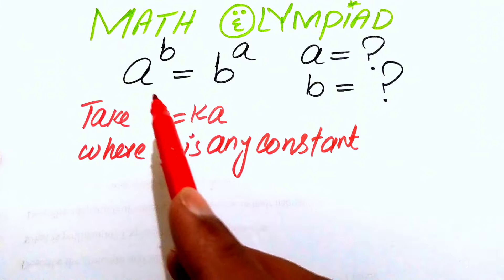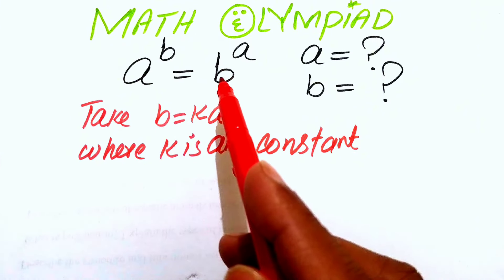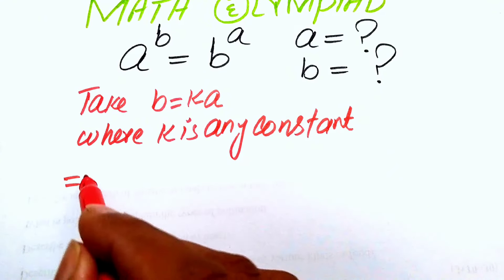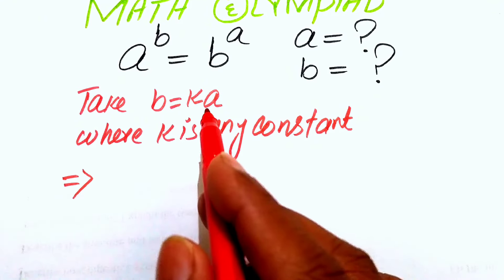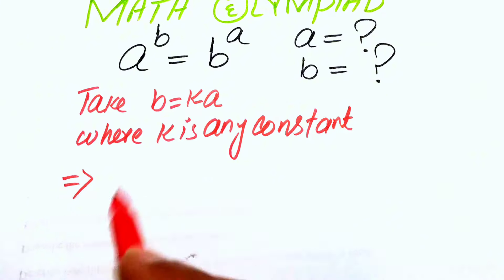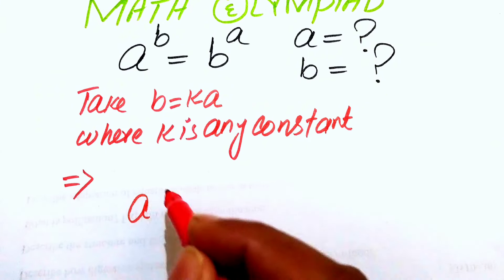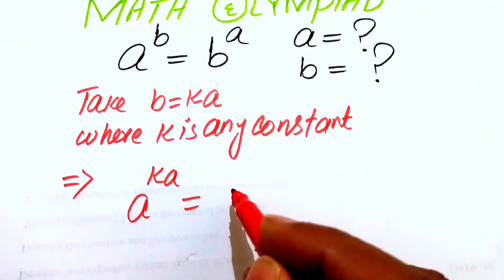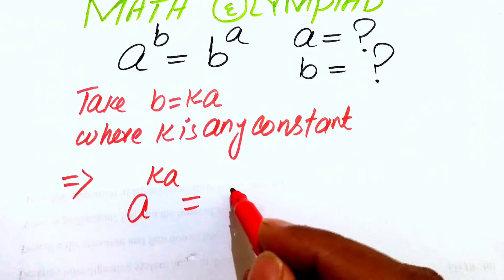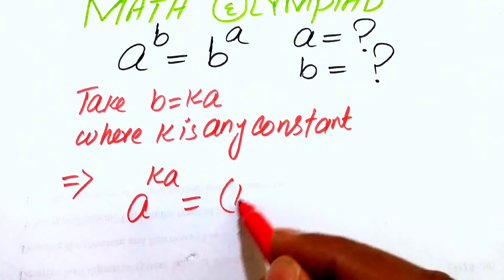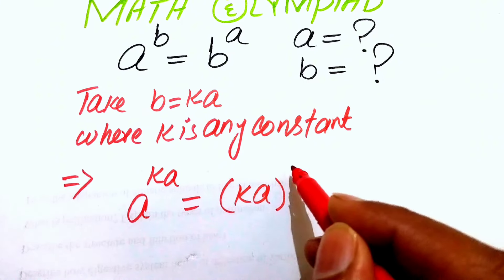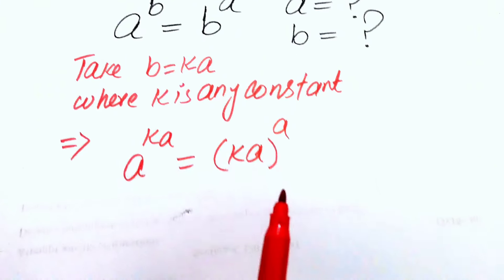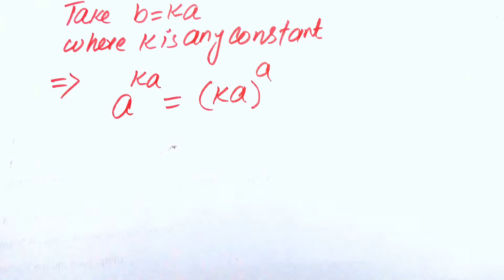Now in order to find the values of a and b, we substitute the value of b on both sides of this equation. The equation becomes: a to the power of k times a, equals b — which is ka — to the whole power a.